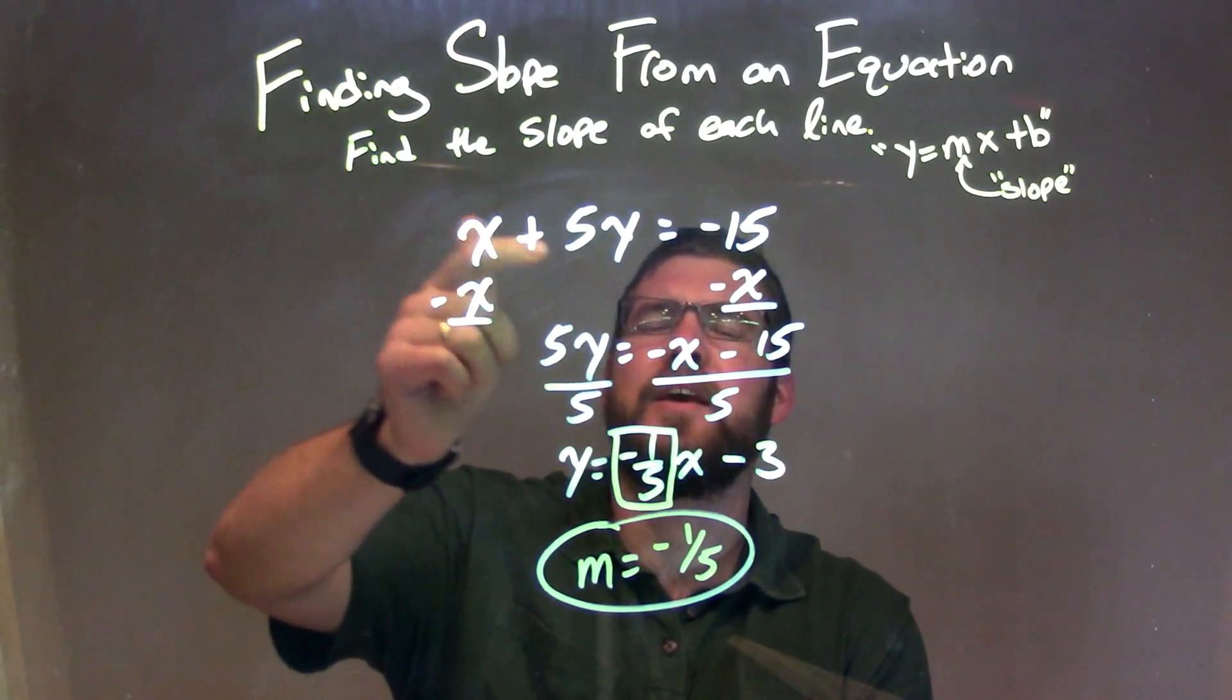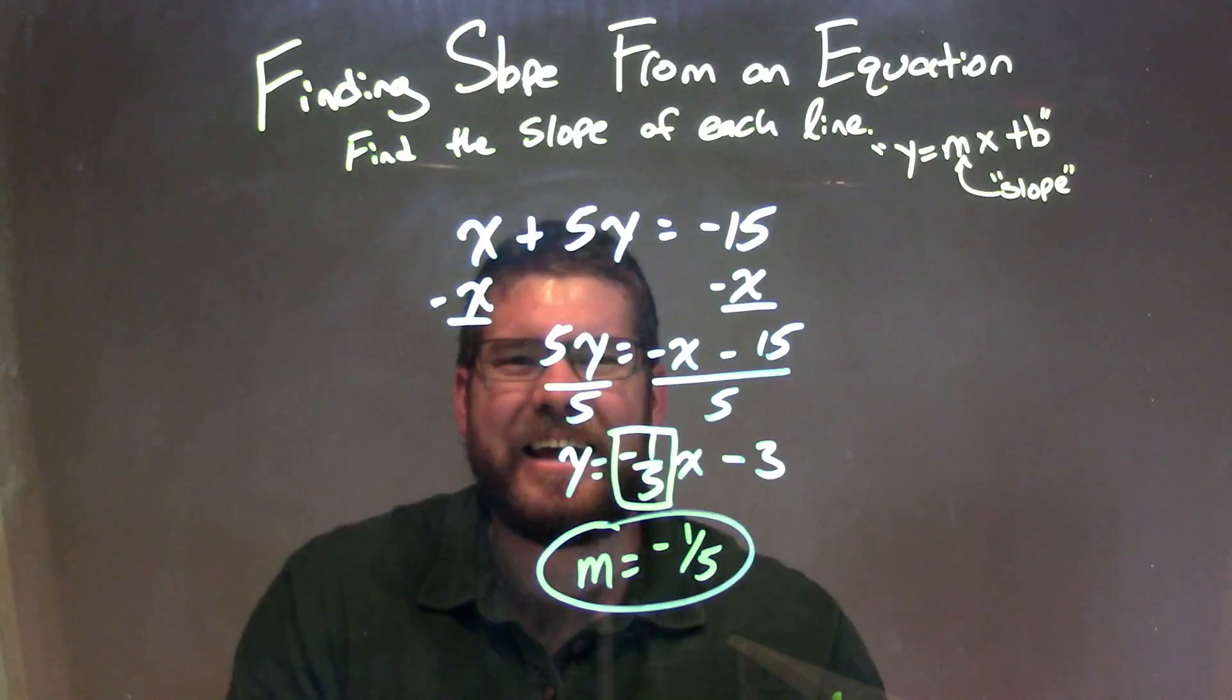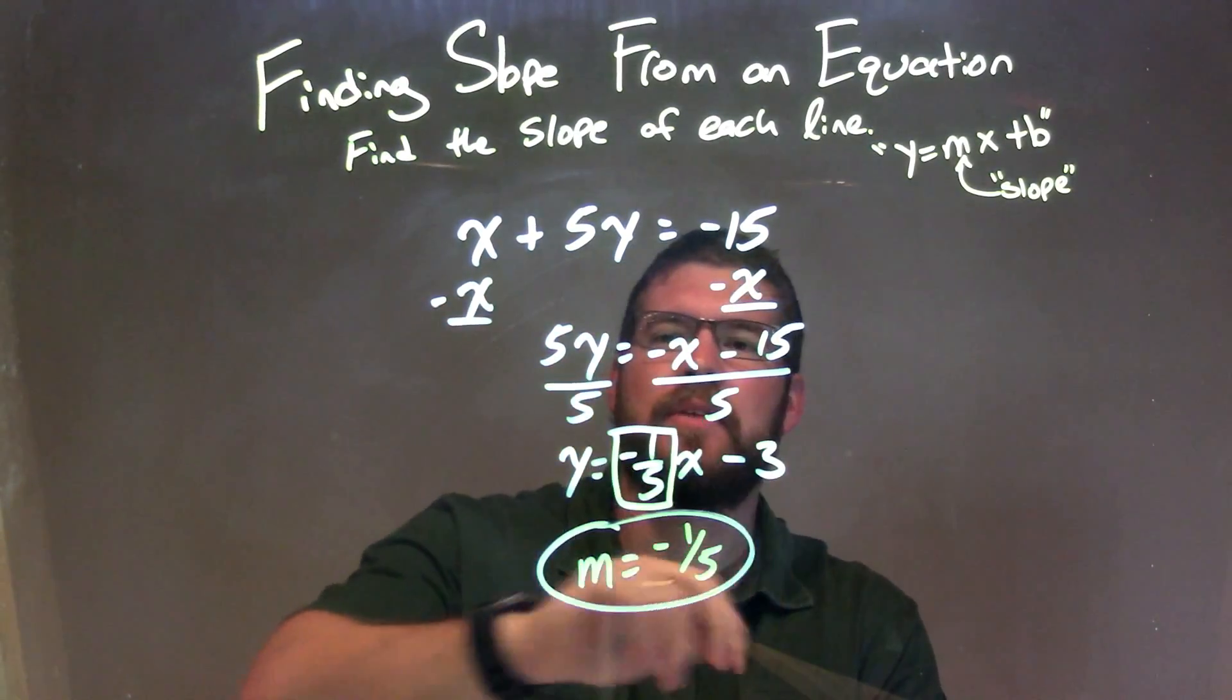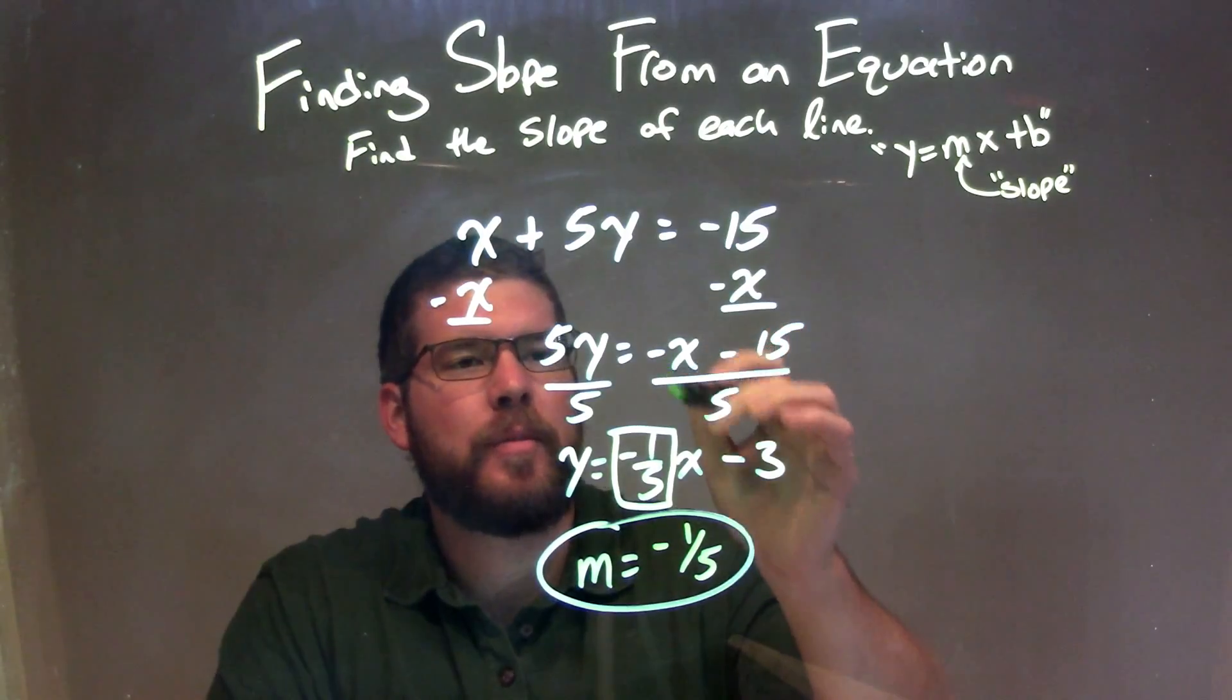So to recap, we're given x plus 5y equals negative 15, and I get y by itself. So I subtract x from both sides, then I divide by 5 on both sides. When I divide by 5, I distribute it to both parts.